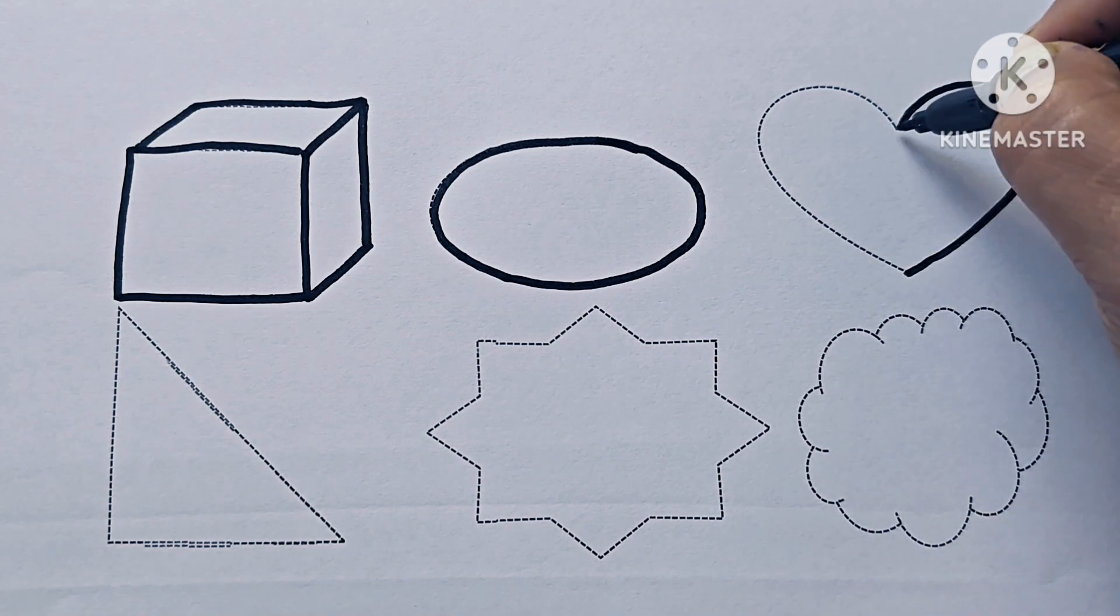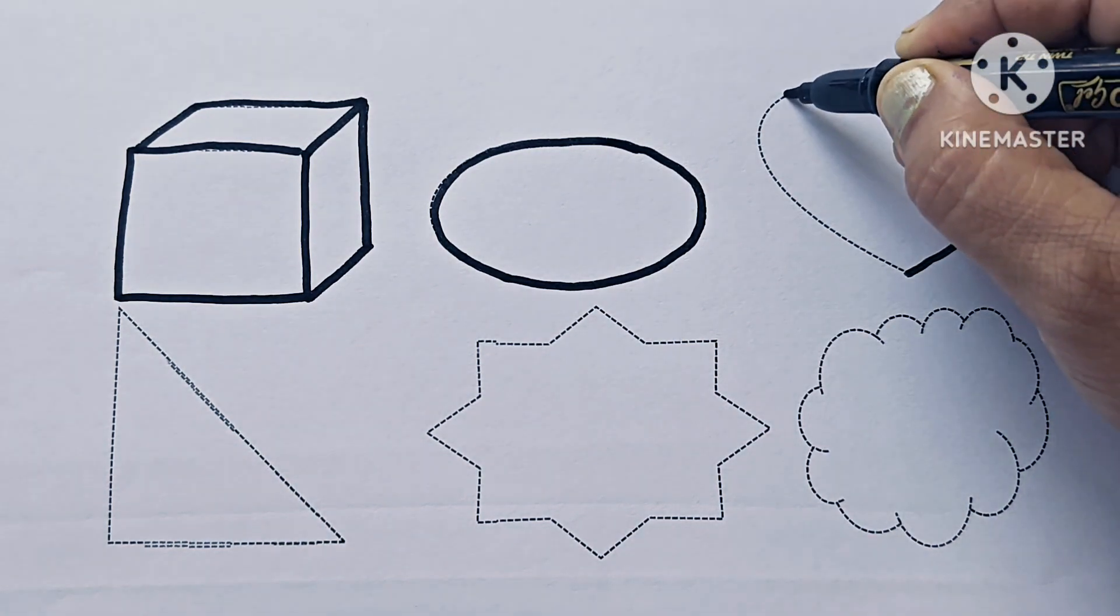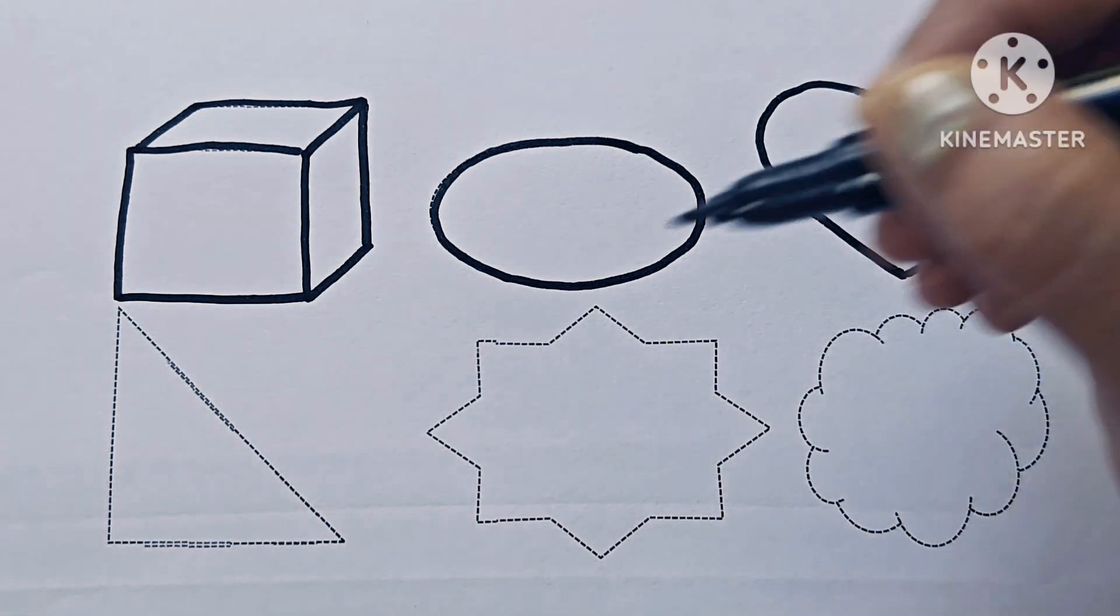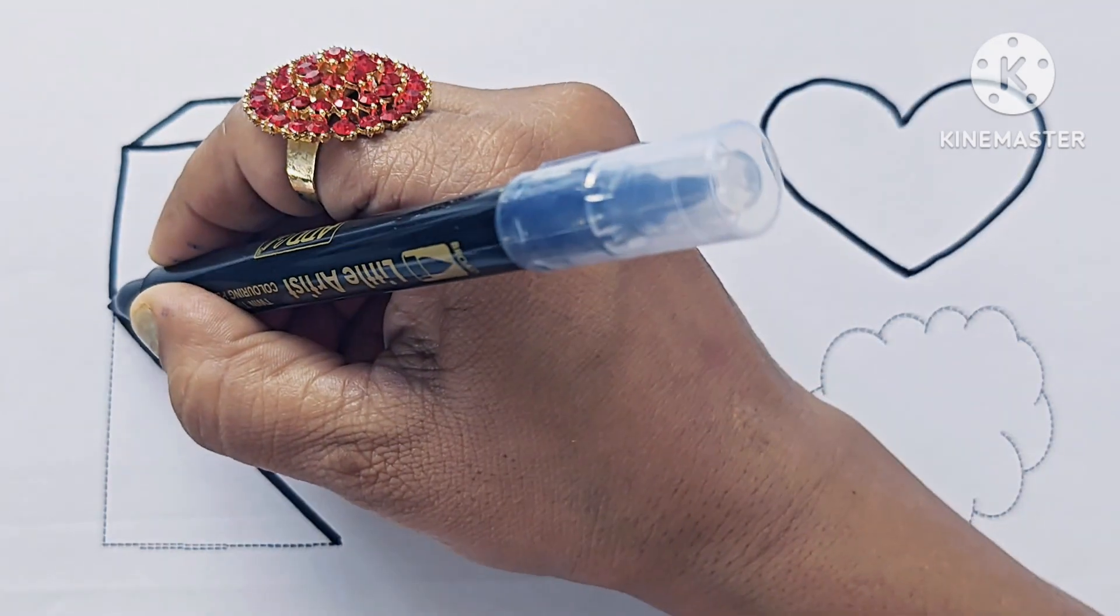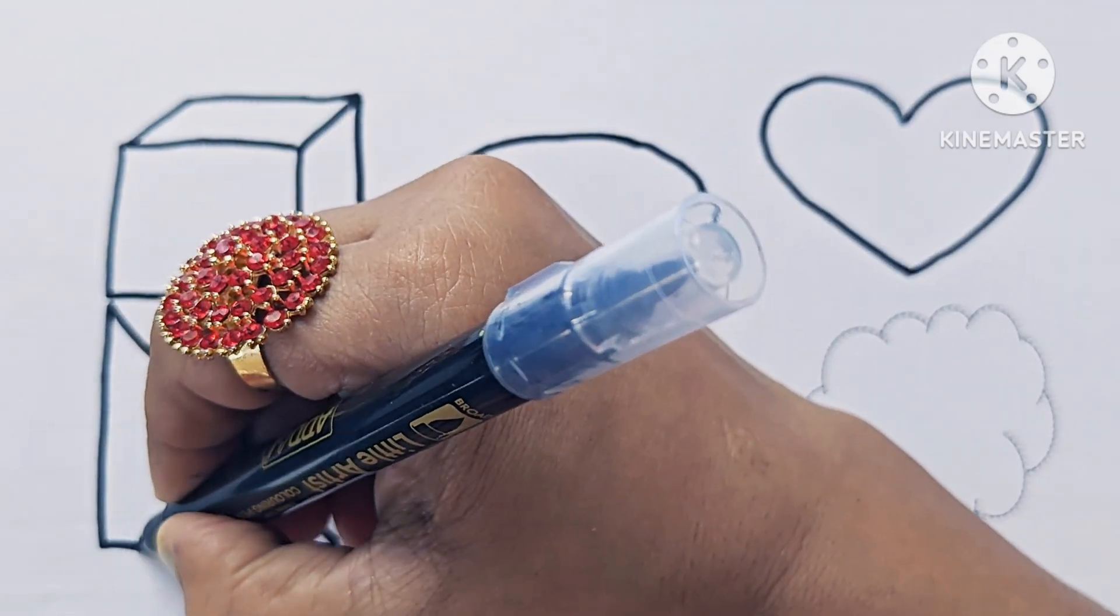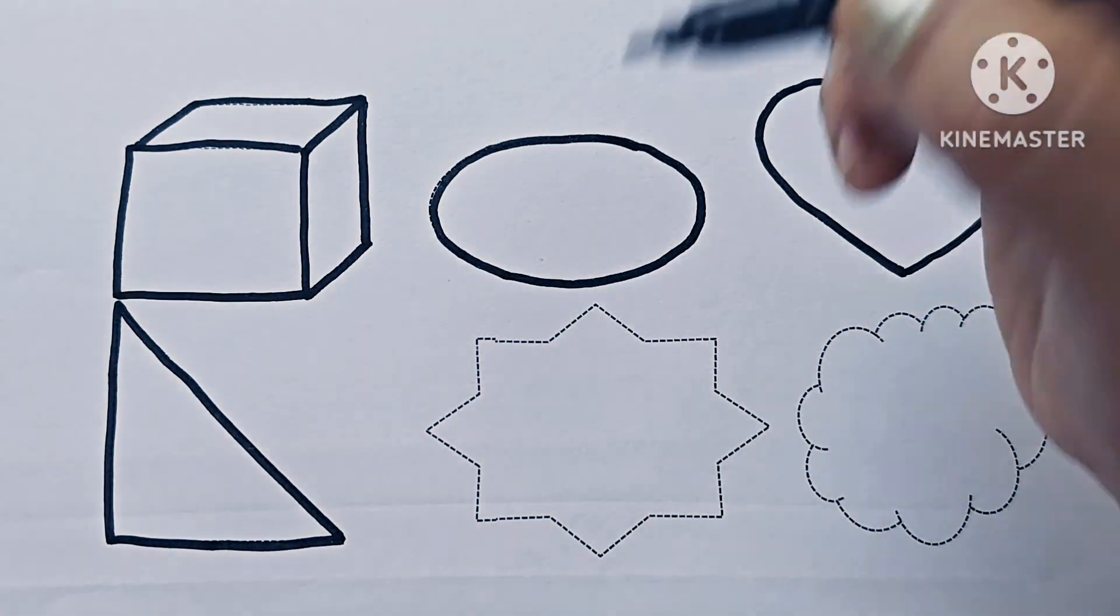This is Right Angle Triangle. One angle is 90 degrees. It has 3 sides, one angle 90 degrees.